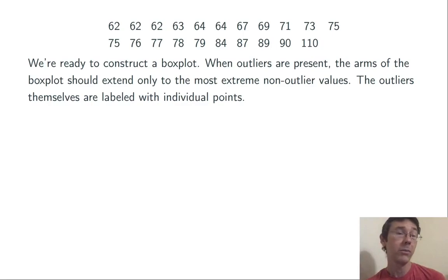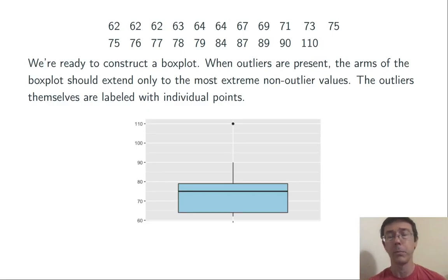The outliers themselves are just going to get labeled with individual points. So here's the box plot in this case. The outlier of 110 has its own dot, and the arm on top extends only up to 90.